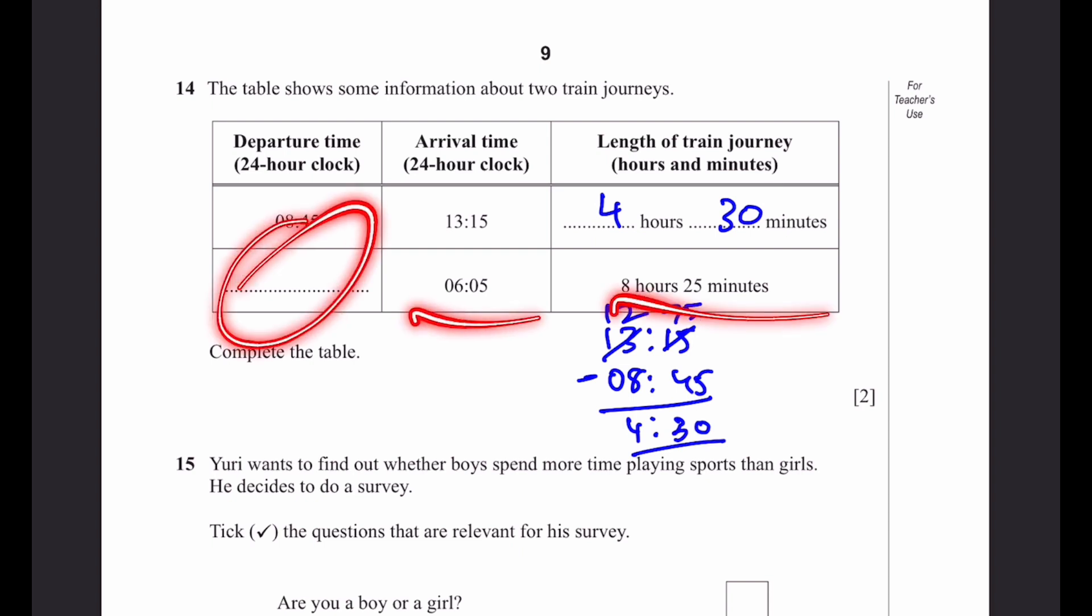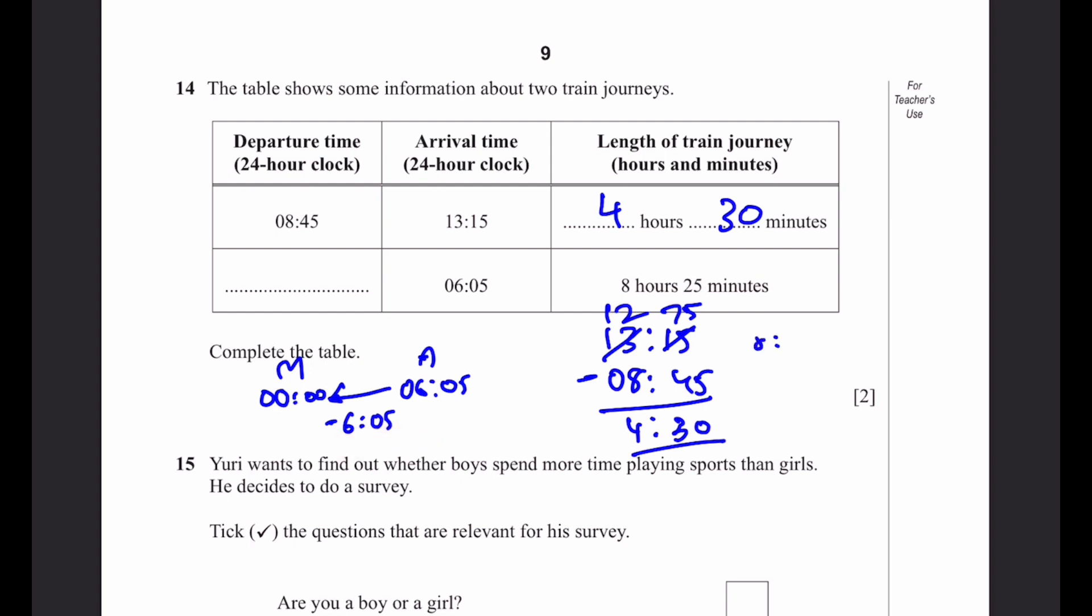For the next one, the departure is not given, arrival and length are given. We can use the timeline method. 6:05 is arrival, and we minus 6 hours and 5 minutes. We have midnight in the middle of the train journey. There's 8:25 minus 6:05, which equals 2:20. So 2 hours and 20 minutes left. If we subtract this 2 hours and 20 minutes, we get 21:40 the previous day. That's the answer.